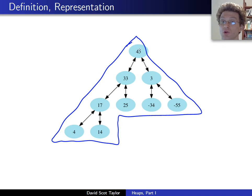Each node has a value larger than or equal to the value of each of its children. And the shape of the tree is this perfectly balanced binary tree.